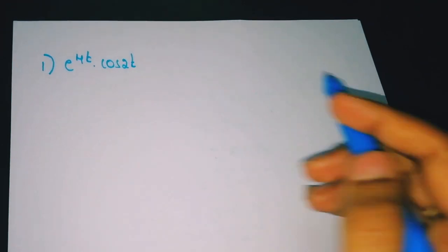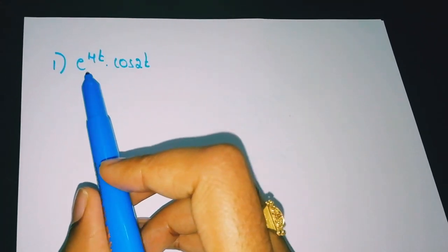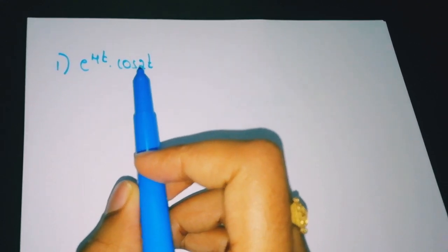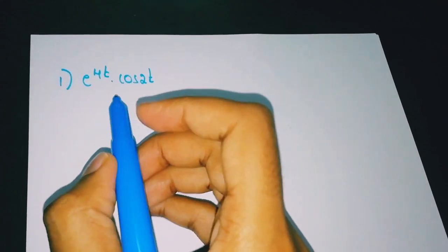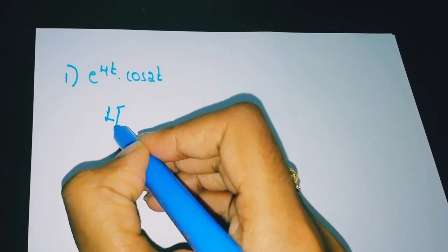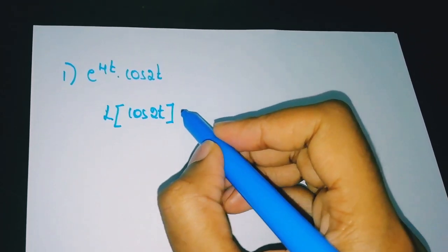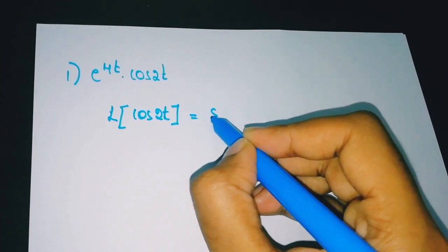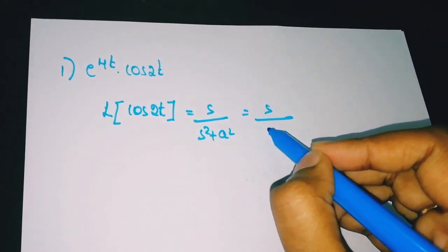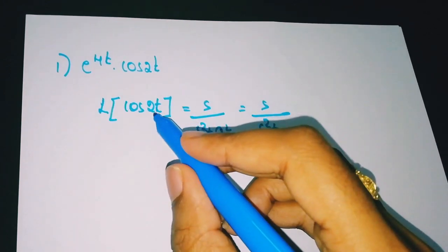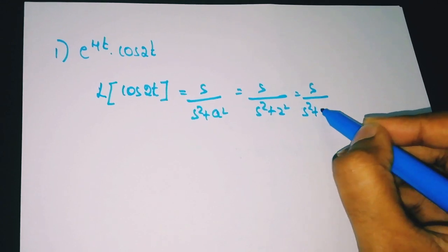Coming to the first problem: L{e^(4t)·cos(2t)}. Here we have an e^(at) term multiplied by a function, so this is a first shifting theorem problem. First we find L{cos(2t)}. The formula for L{cos(at)} is s/(s²+a²). With a=2, that gives s/(s²+4).